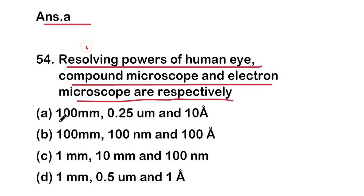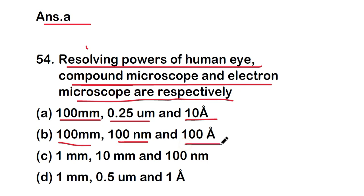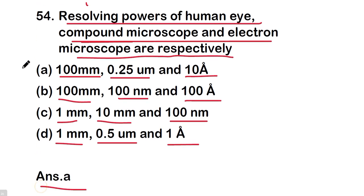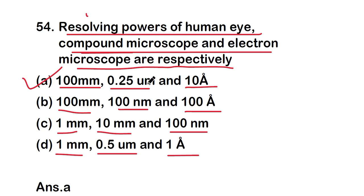Next question: the resolving power of the human eye, compound microscope, and electron microscope are respectively — option A: 100 mm, 0.25 micrometer, 10 angstrom; option B: 100 mm, 100 nanometer, 100 angstrom; option C: 1 mm, 10 mm, 100 nanometer; option D: 1 mm, 0.5 micrometer, 1 angstrom. The right answer is option A — 100 mm for human eye, 0.25 micrometer for compound microscope, and 10 angstrom for electron microscope.